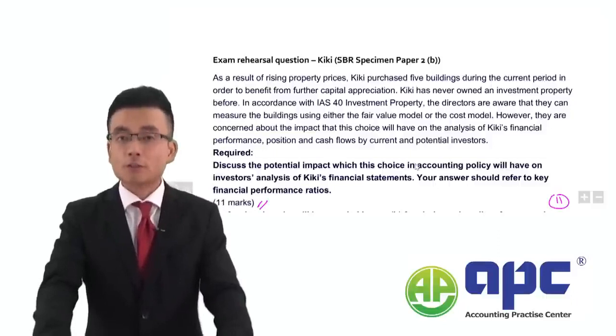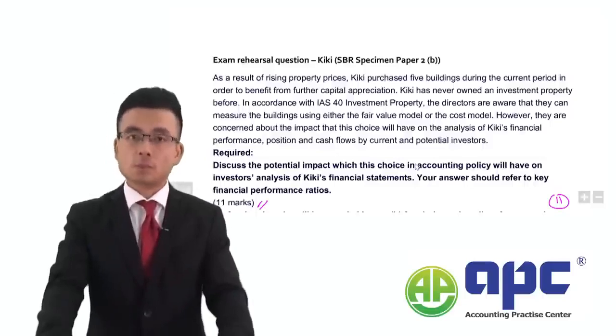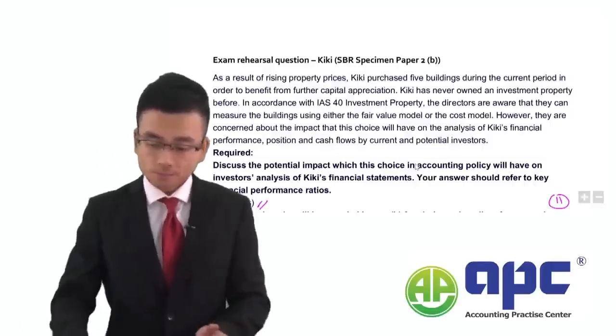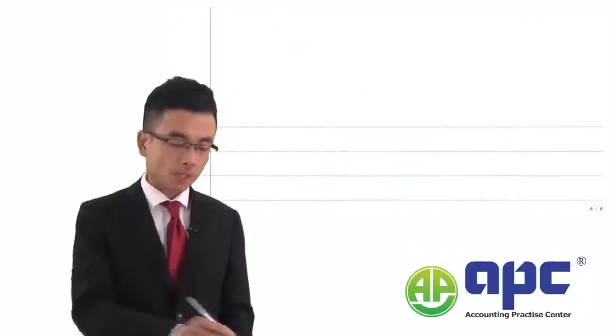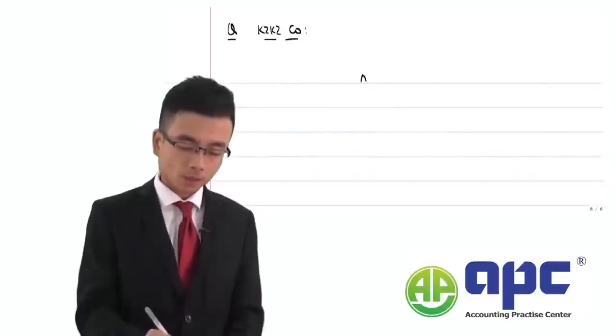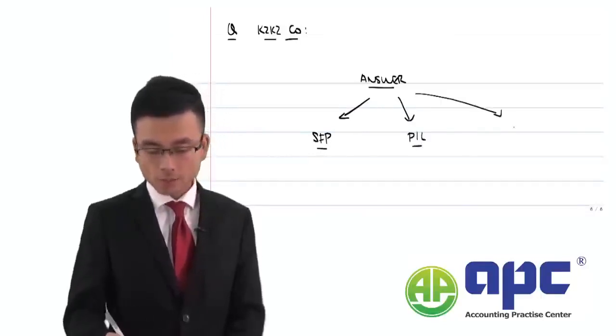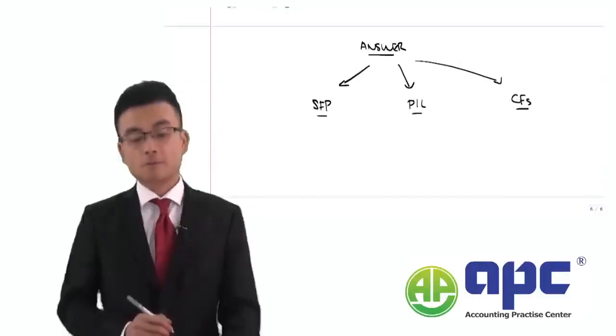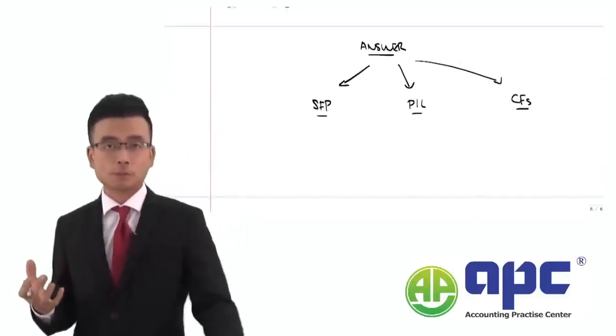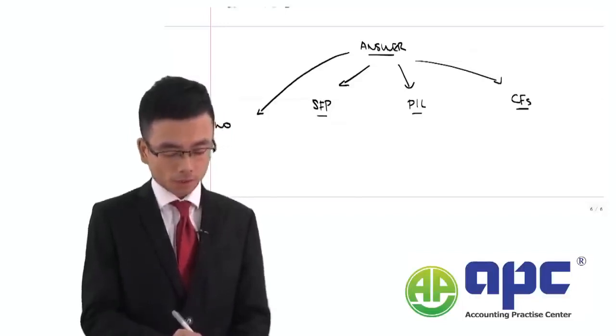So in other words, as I said, you have to focus on the investor's needs rather than talking about the general accounting treatment of investment property. From my perspective, I will structure the answer in this way. A question called Kiki Company or Kiki Limited. The answer should focus on the statement of financial position, the P&L and the statement of cash flows. As I said before, because we've never accounted for the investment property before, this means we've got two accounting policies that we can use.